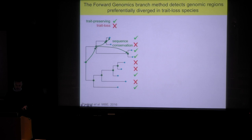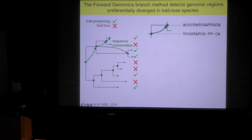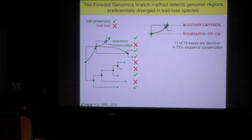This allows us to focus at the start and end of each branch and measure how much of the sequence of this element is still conserved. For example, if this is the sequence at the start of a branch and this is the sequence at the end, we simply count the number of identical bases after aligning these sequences. In this case, 11 out of 15 bases are identical, so we say that 73% of that sequence was conserved along that particular branch.